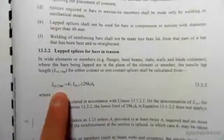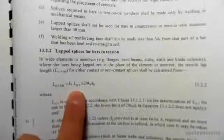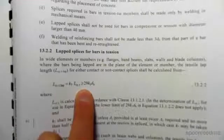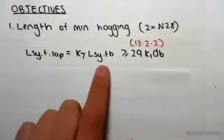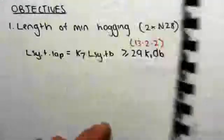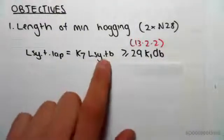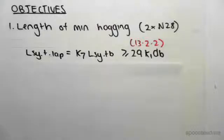So I've just rewritten it here. lsy.t.lap, and lsy.t and lsy.tb are the same thing. That's just taken from the previous clause, so that is from 13.1.2.2.